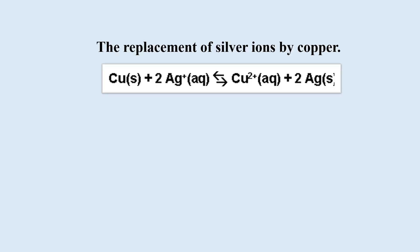For the replacement of silver ions by copper, we write the following. Where solid copper metal reacts with 2 moles of silver ions in aqueous solution is in equilibrium with Cu2+ ion in aqueous solution and solid silver metal. So, the Kc expression for this will exclude the solid copper and the solid silver. So, we write concentration of copper 2 plus ion divided by the concentration of the silver ion squared.